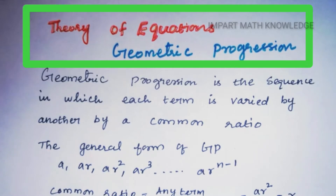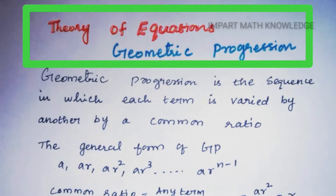Geometric Progression is a sequence where every term bears a constant ratio to its preceding term. The general form of Geometric Progression is a, ar, ar², ar³, etc., up to ar^(n-1).